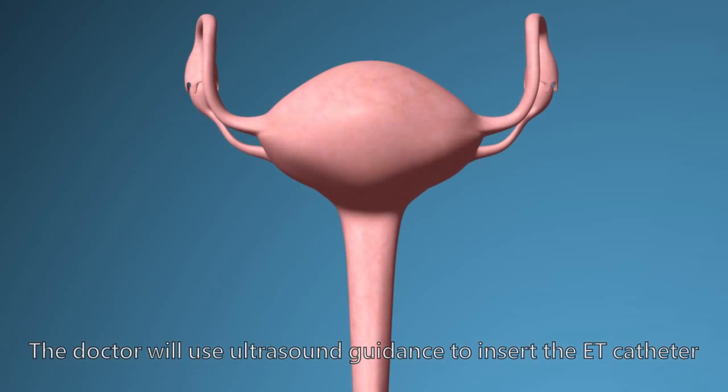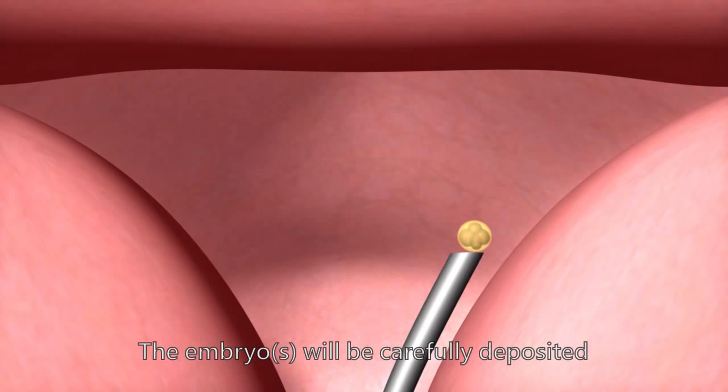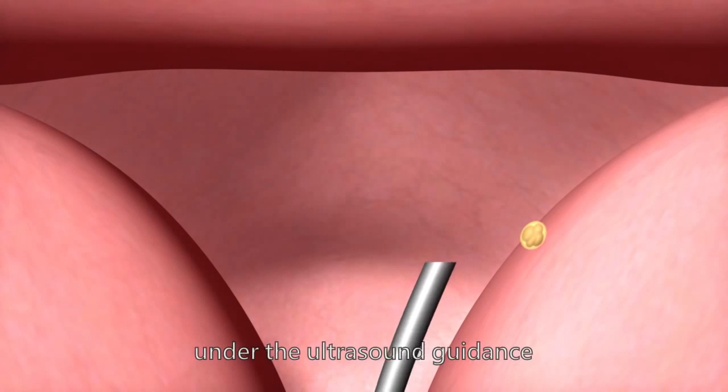The doctor will use ultrasound guidance to insert the ET catheter containing the embryo into the uterus. The embryo will be carefully deposited onto the appropriate side of the uterus under the ultrasound guidance.